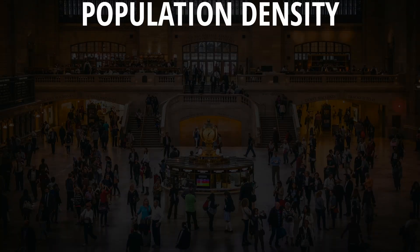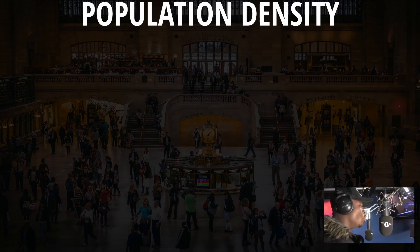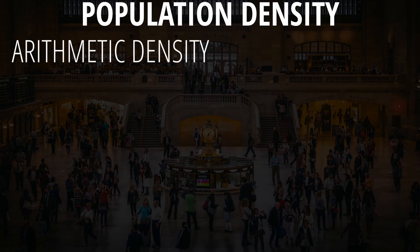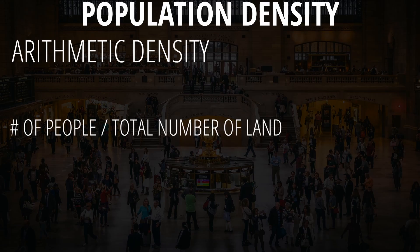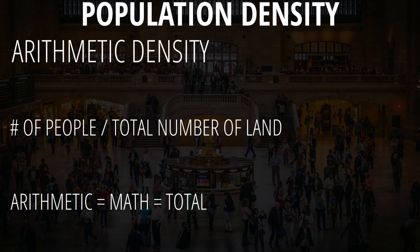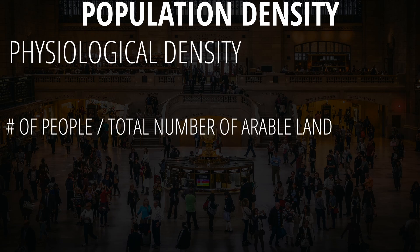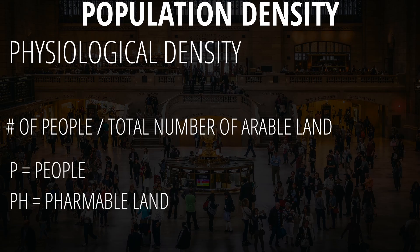Then there's the concept of population density, and we'll have to do a little bit of math. There are three ways to measure this distribution or density. First is arithmetic density, which takes the total number of people divided by the total number of land — arithmetic means math, so think total of everything. The second measurement is physiological density, which divides the total number of people by arable land, which just means farmable land. A silly way to remember this is to look at the first two letters: P equals people, PH equals farmable land.